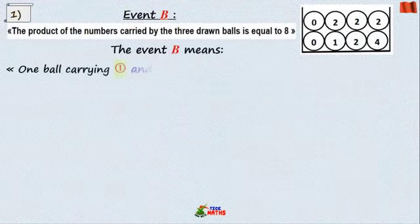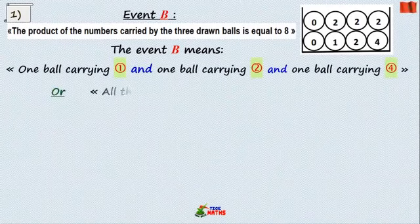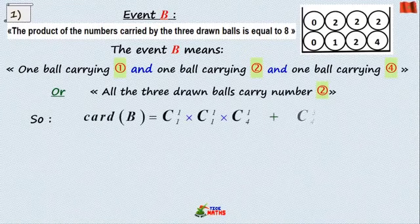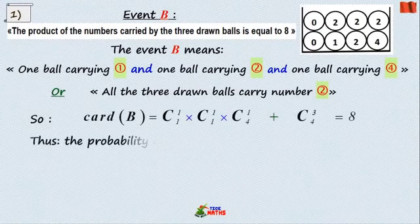The event B needs firstly to be explained before calculating cardinality of B and using the equiprobability hypothesis formula.